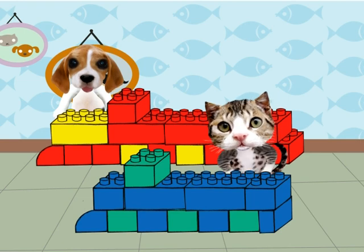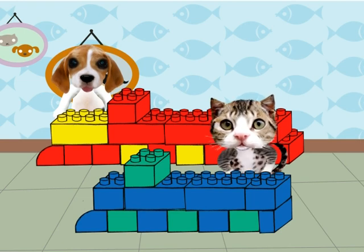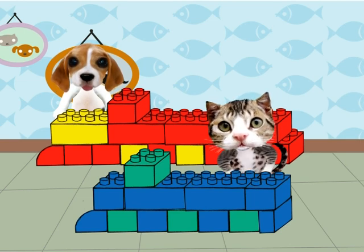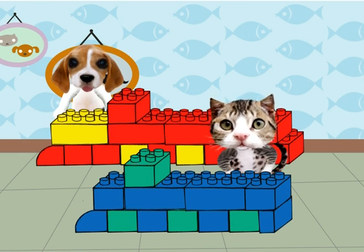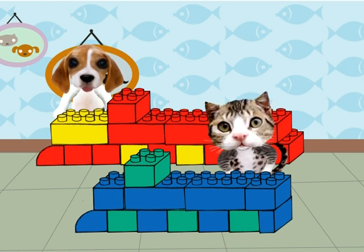El tren de Pepe es rojo y amarillo. Y el tren de Katy es azul y verde. Vamos a compararlos.